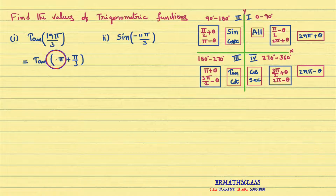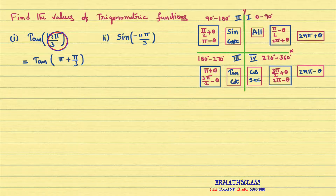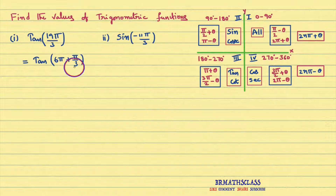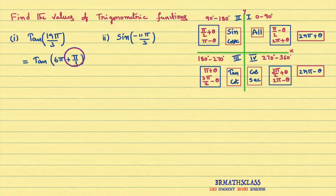Now you start writing some natural numbers here. For example, if you write 2: 3 into 2π, 6π plus π is 7π. But we need a bigger value. If I write 6 here: 6π into 3 — what you will get? 18π plus π is 19π by 3. I hope you are understanding. If we simplify: 18π plus π is 19π by 3.